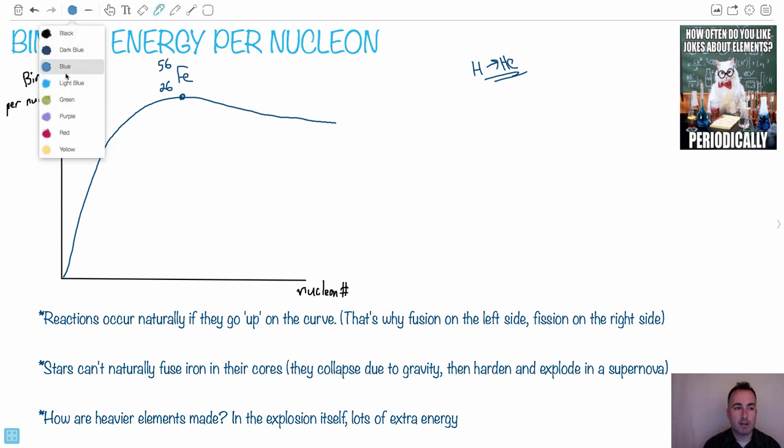They have to go up in binding energy per nucleon. So what that means, that means that if I'm looking at something like hydrogen here, and I want to go up on the curve, do you notice that means I have to go right? That means I have to go from a lighter thing to a heavier thing. And we call that fusion.